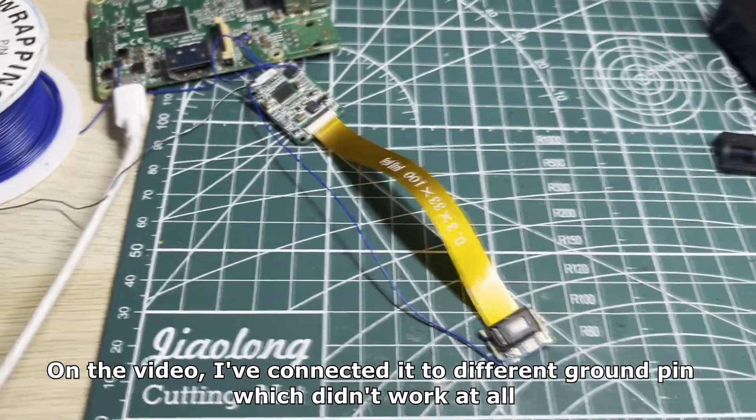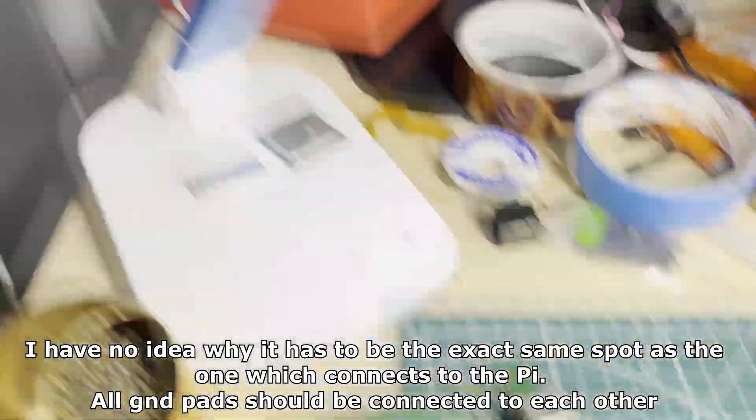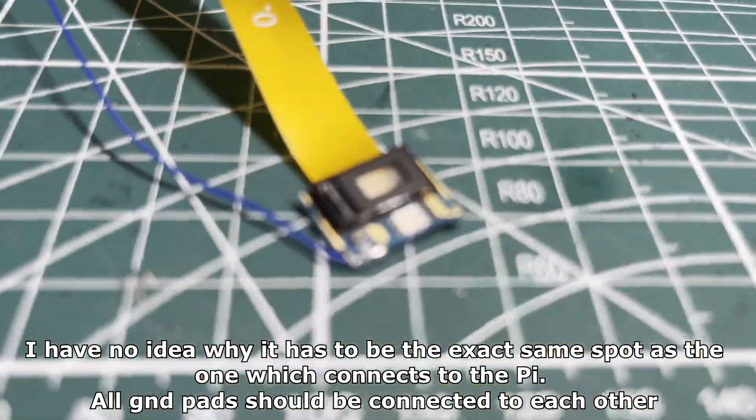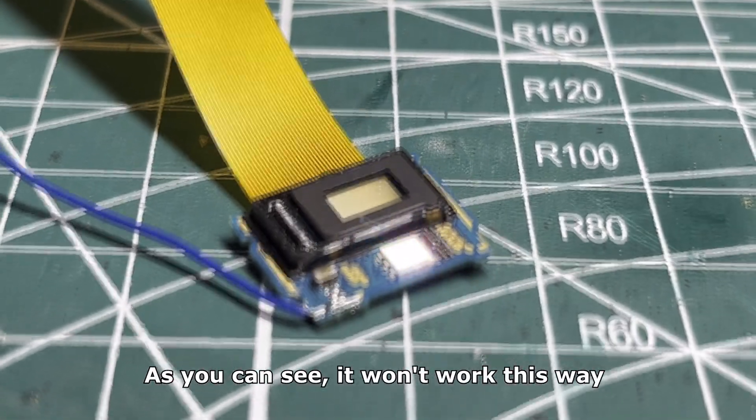On the video I've connected it to a different ground pin which didn't work at all. I have no idea why it has to be the exact same spot as the one which connects to the Pi. All ground pads should be connected to each other. As you can see, it won't work this way.